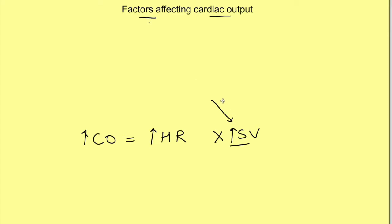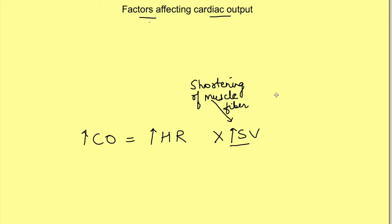Now this stroke volume is in turn dependent on two things. One is shortening of the muscle fiber — the more it is contracting, it will cause increase in the stroke volume. The second aspect is the size of the ventricle; more the size of the ventricle, that means there is more muscle mass, so obviously its contraction will cause increase in the stroke volume. Let us now see what things will affect these aspects.